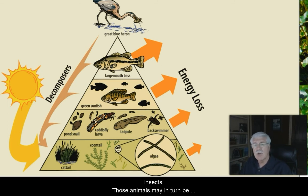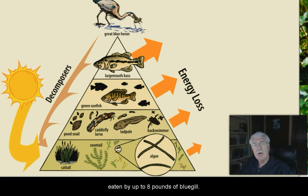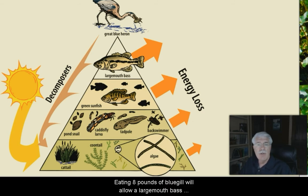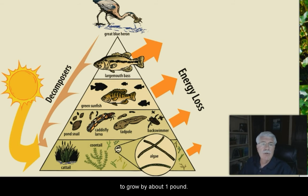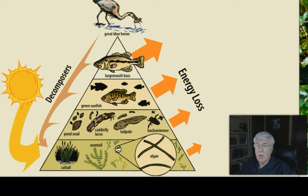Those animals may in turn be eaten by about 8 to 10 pounds of bluegill. Eating 8 to 10 pounds of bluegill will allow a largemouth bass to grow by only about one pound.